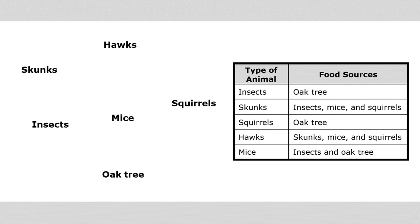We can also use a table of food sources to fill out a food web. Our producers are only in the food sources column — they're not animals, so they wouldn't be in the 'type of animal' column, and they don't get food like animals do. They get their energy from the sun, so you'll only see producers in the food sources column.